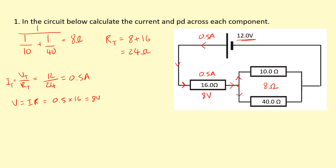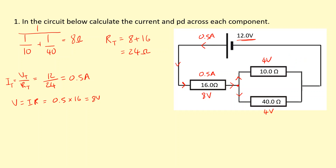Now if that's 8 volts across that resistor, we know the rest of the energy needs to be used in either one of those two parallel resistors. So the voltage across each will be 4 volts — whatever route the electrons take, they need to use a total of 12 volts. Now I have the voltage and resistance for each, so I can work out the current through each route using I equals V over R. So 4 divided by 10 gives me 0.4 amps through that one, and 4 divided by 40 gives 0.1 amps through the other. And those currents join back up to go around the circuit.